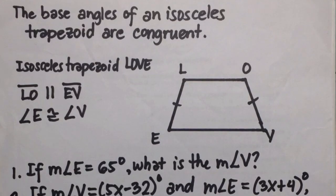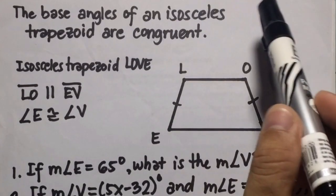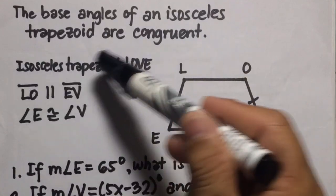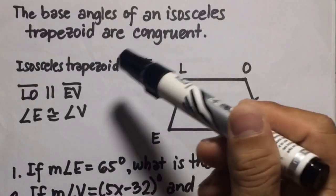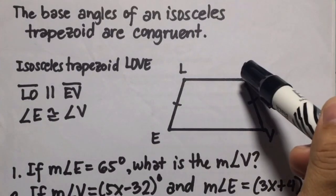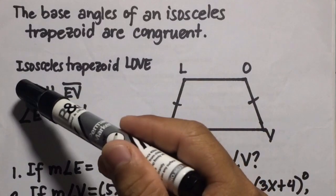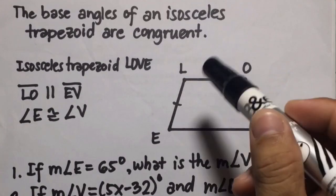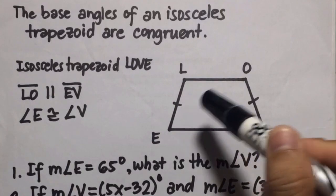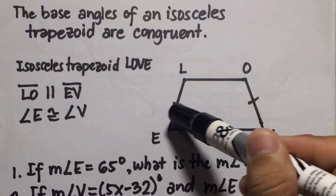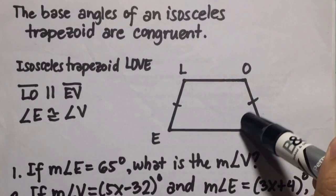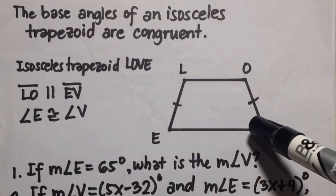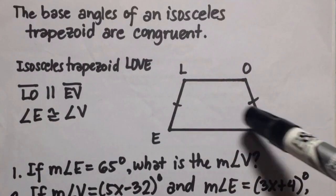First is the base angles of an isosceles trapezoid are congruent. An isosceles trapezoid is a trapezoid with one pair of congruent sides. In isosceles trapezoid L-O-V-E, the congruent sides are L-E and O-V, and L-O is parallel to line segment E-V. The base angles are the angles found in the base of the trapezoid — in this example, angle E and angle V. Using this theorem, angle E is congruent to angle V, so these two have equal measurements.